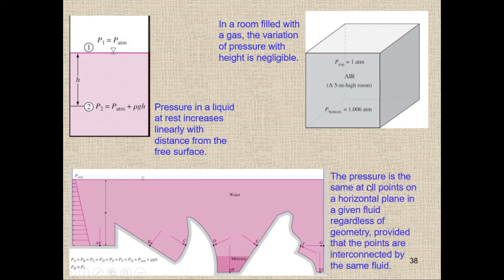The pressure is the same at all points on a horizontal plane in a given fluid, regardless of geometry, provided the points are interconnected by the same fluid. To summarize: pressure is the same for the same liquid at the same horizontal level; pressure increases going downward and decreases going upward; and for gases we neglect pressure variation with height.